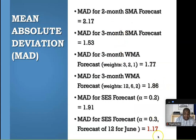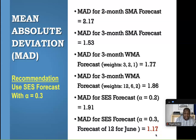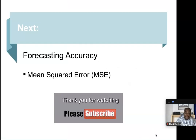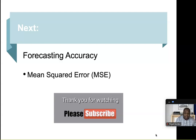So here we have it. Looking at all results: 2.17, 1.53, 1.77, 1.86, 1.91, and 1.17. The lowest of all is 1.17, which means the most accurate technique we have covered is simple exponential smoothing with alpha equals 0.3. Based on that, we would recommend the simple exponential smoothing forecast with alpha = 0.3 — it has the lowest MAD, which means it's the most accurate. Thank you for watching. Looking forward to seeing you for the next video, which will cover the mean squared error. Please like and subscribe — take care and I'll see you again soon.